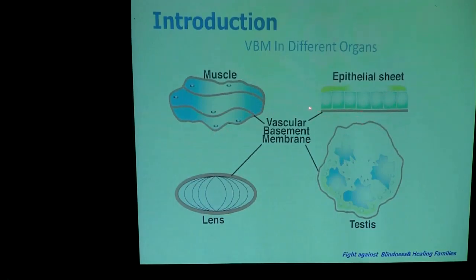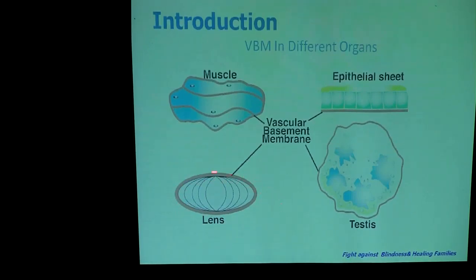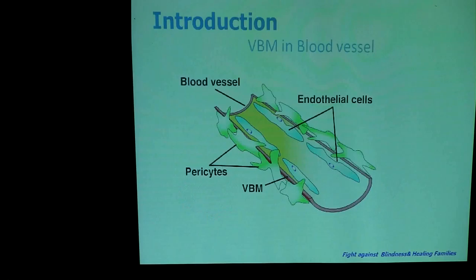The epithelial sheet, shown in red, and the eye lens has a lenticular basement membrane surrounded by a tough structure in the eye. The sac or testes is surrounded by a testicular basement membrane. Like that, every organ has its own basement membrane.